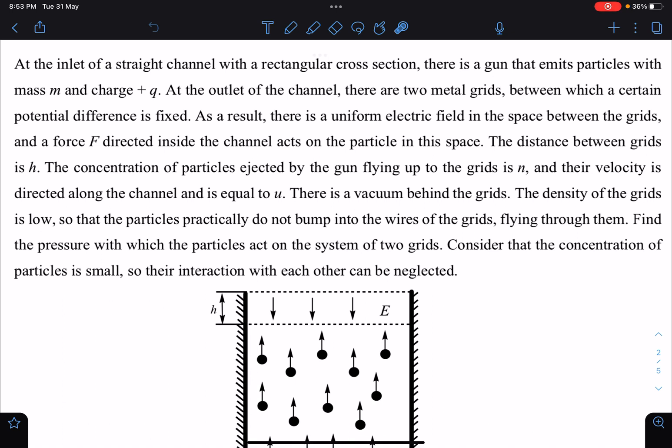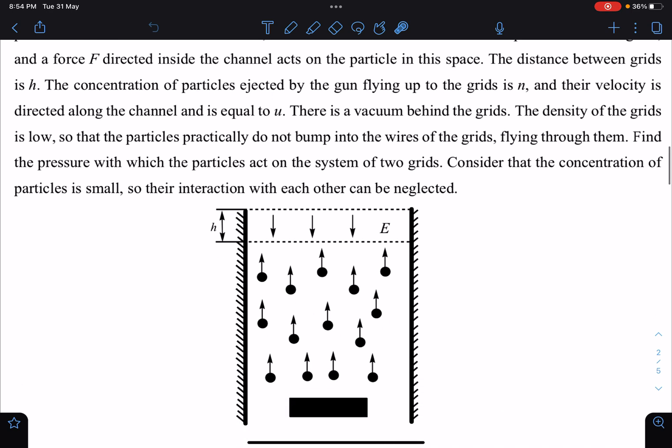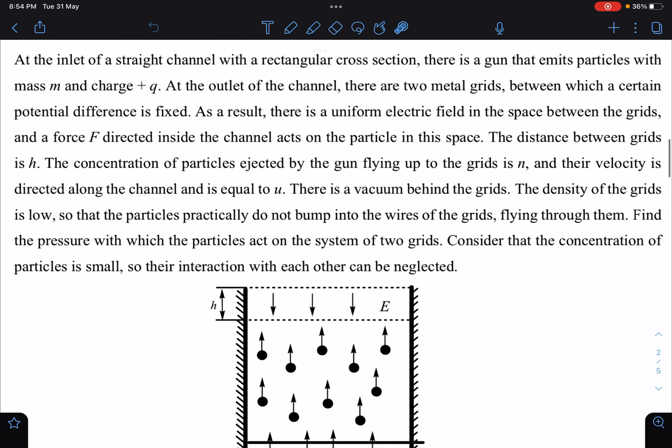I'll just give you the brief idea. The inlet is given here, and from here there is a gun which is emitting charged particles with mass m and charge q. At the outlet of this channel there are two thin metal grids, and the height is given as h.